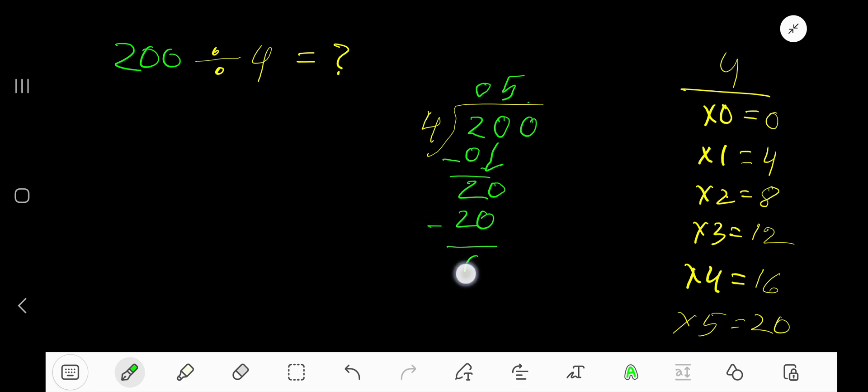Bring down this 0. 0 divided by 4 is 0 times. 0 times 4 is 0. Subtract 0, we get 0. So 50, that is 50, is our answer.